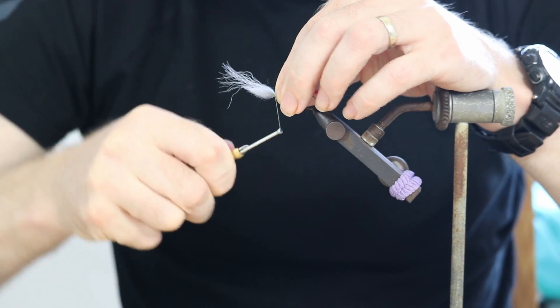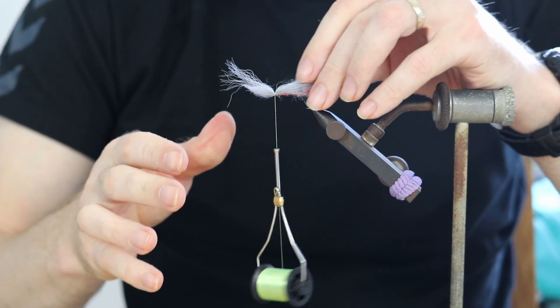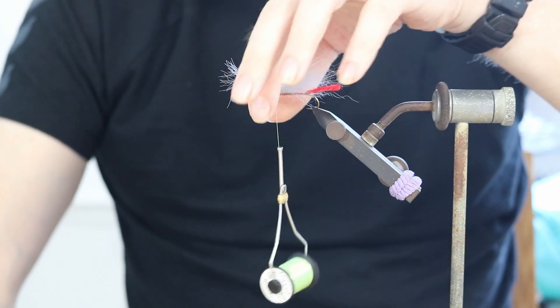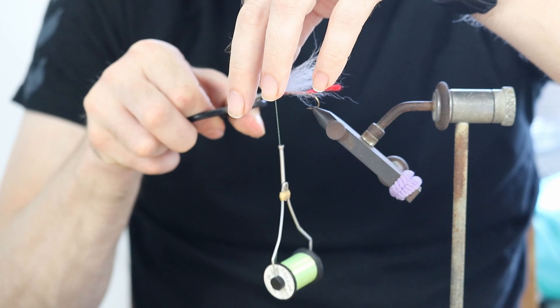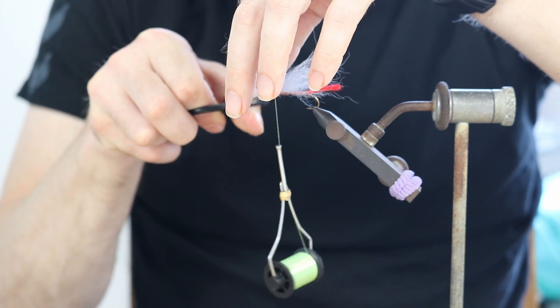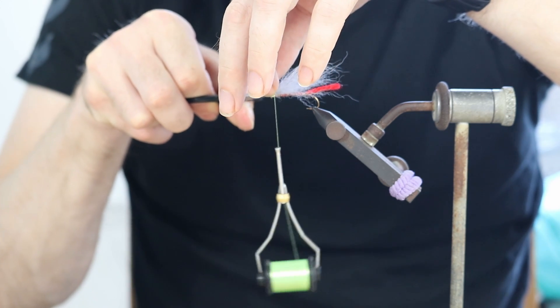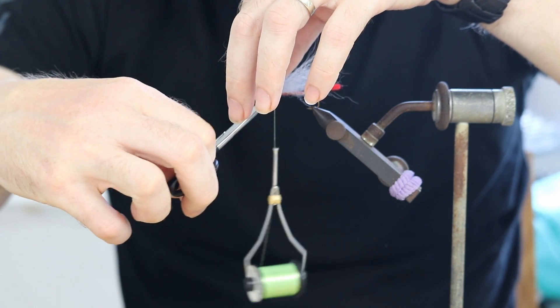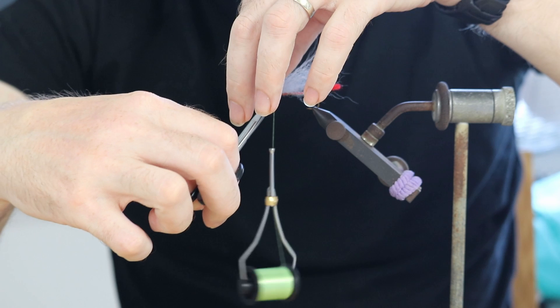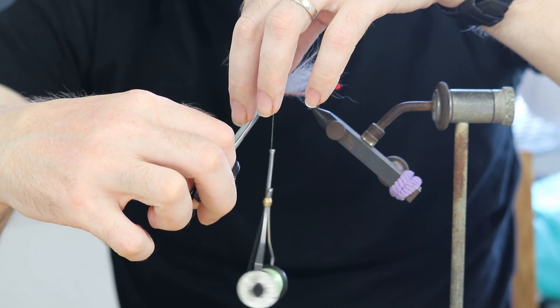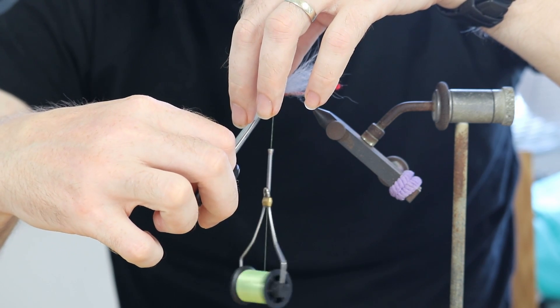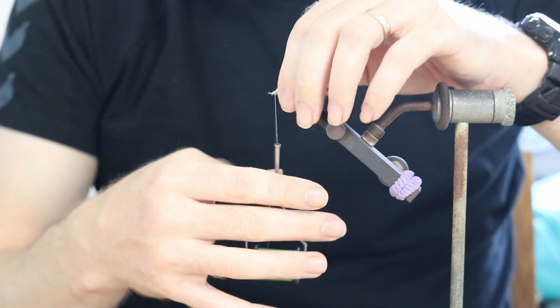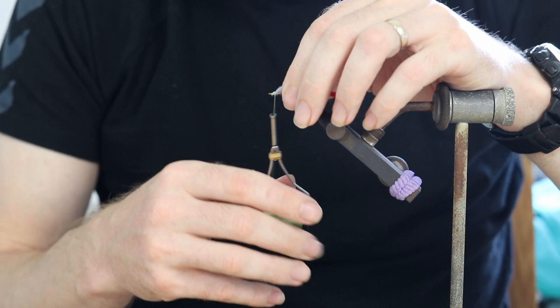And then we do the one, two, three, four, five turns, hard tight wraps. Check again we have it sitting where we want. We can now go in, snip off the ends as close to the tie-in point as possible. So now we know that we used five turns.